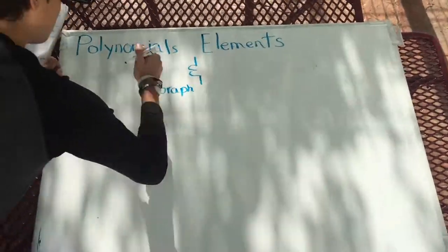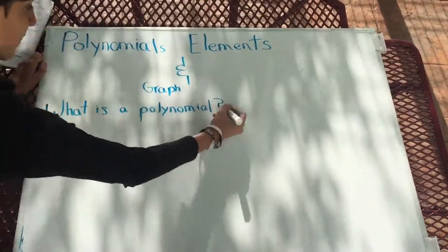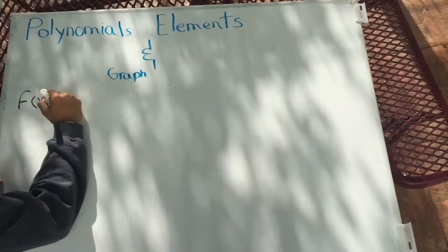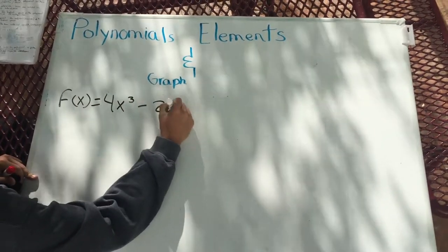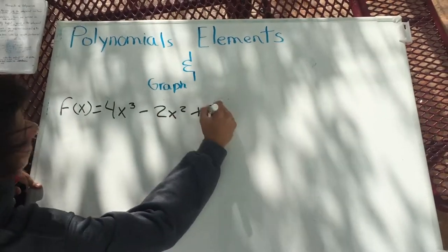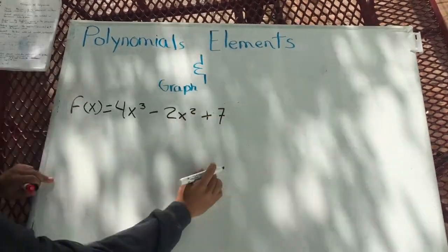Polynomials elements and graphs. A polynomial is an expression that can have constants, variables and exponents. It can be formed using addition, subtraction, multiplication, and division.